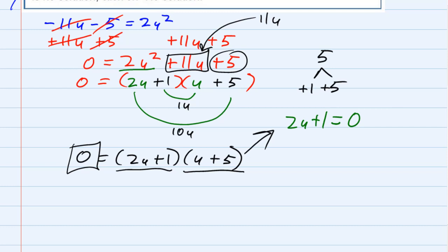And if it is equal to 0, we can solve it and subtract the 1 over to the other side. Subtracting the 1 gives me 2u equals negative 1. And then divide the 2 over. Dividing the 2 gives me u equals negative 1 half.